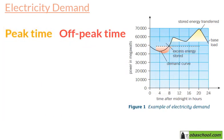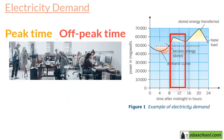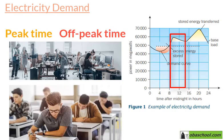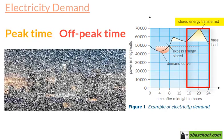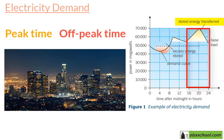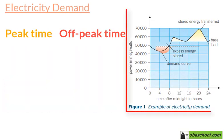Then there's a peak time between 8 and 14 o'clock, where people are at work and children are in school. And then, obviously, there's a large transfer of stored energy in the evenings, between 16 and 24 o'clock, after school and after work. This is an example of how our energy demand varies throughout the day.